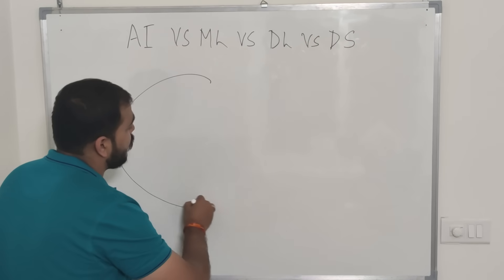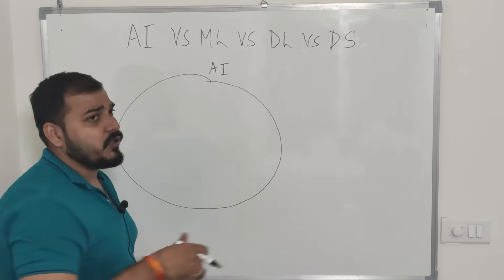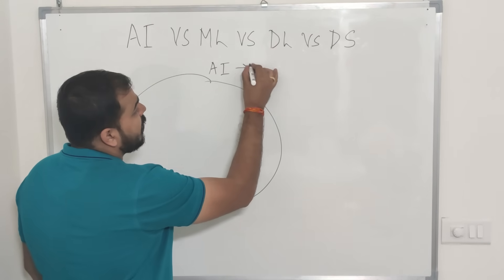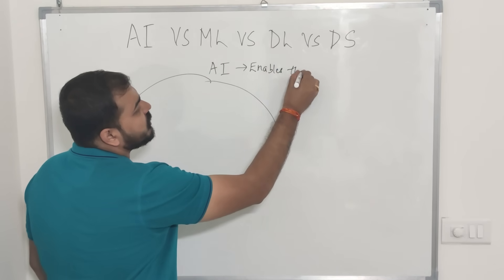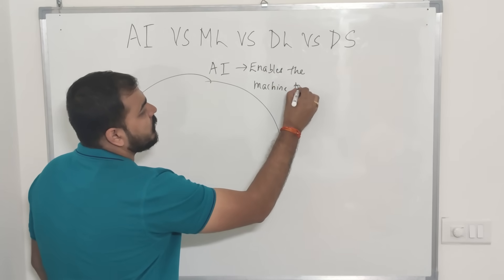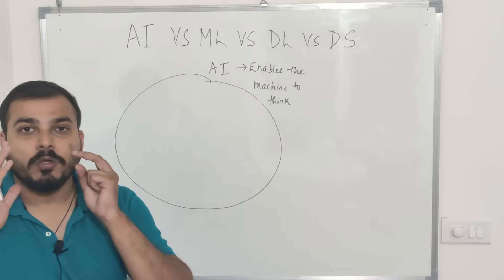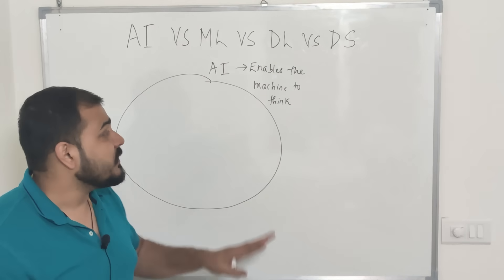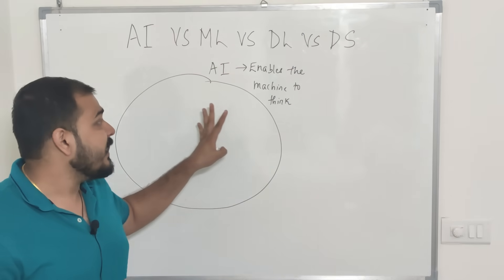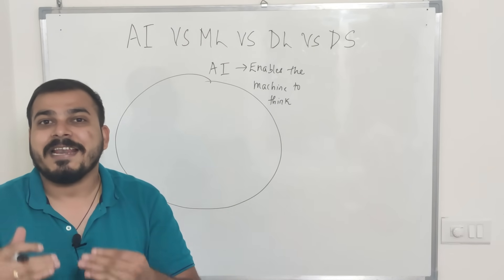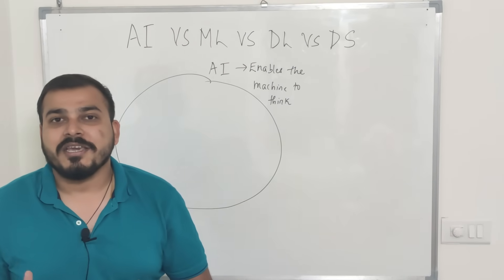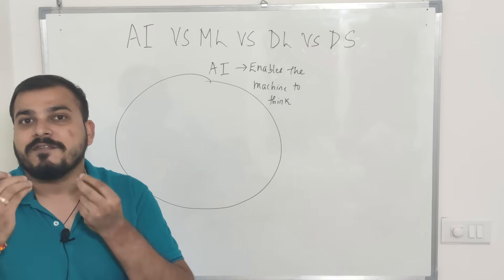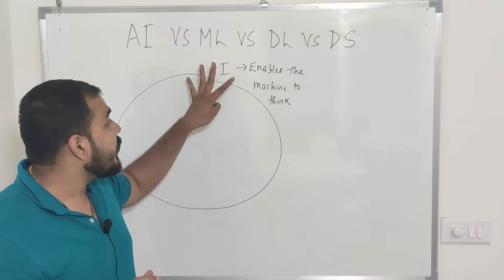Let me consider a Venn diagram for AI. You've heard of AI applications and AI engineer positions. AI basically enables the machine to think — meaning without any human intervention, the machine is able to take its own decisions. This is the final goal: you create an AI application. A self-driving car is an AI application; an app which uses machine learning and deep learning within it is basically an AI application. So finally, the goal is to reach here and create an AI app.